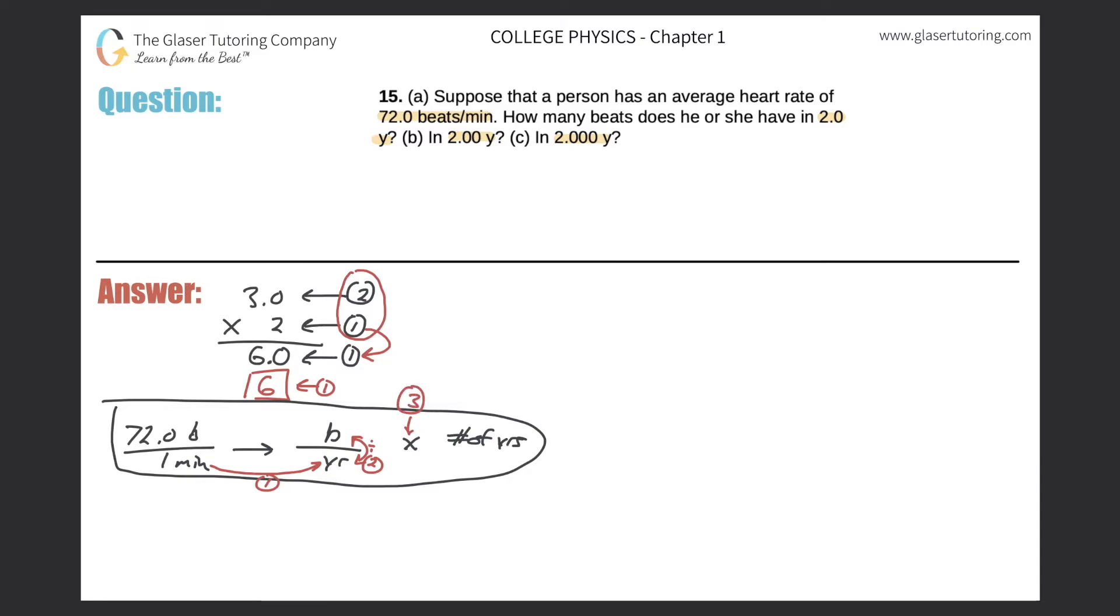Step number one: take one minute and convert that into years. Let's write down what we're given. One minute. Minutes on the bottom. I can't put years on the top, reason being is I don't know how many minutes there are in a year, but I do know how many minutes there are in an hour.